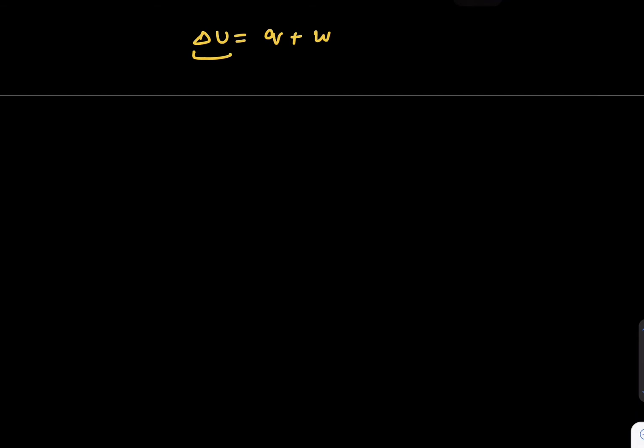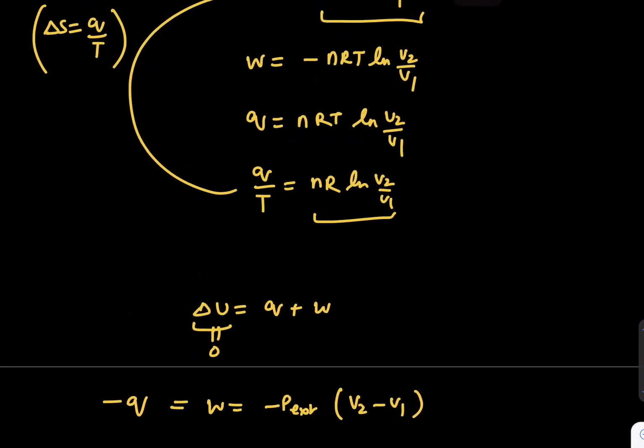ΔU itself equals zero, and work done will equal minus P external times (V₂ minus V₁). We can take help of this and calculate the value of Q, because this equals minus Q. Once you have this, you can always talk about the entropy change for those cases also.